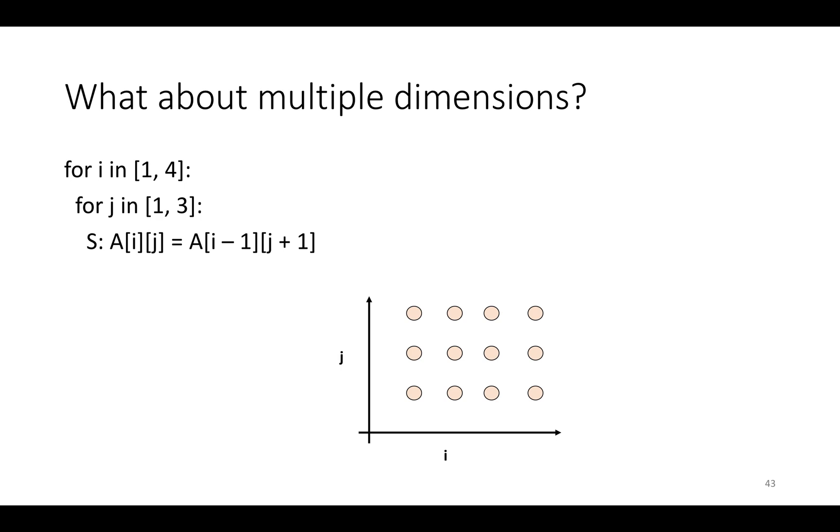So the other issue about generalizing the technique we learned in the last video is what about multiple dimensions? In the last video, the set of equations that we got and the program analysis problem that we were doing were based on a one-dimensional program transformation. Take one for loop and ask whether it could be reordered. But how do we deal with the problem of loops with multiple different for loops or loop nests with multiple loop levels like the one we see on the left here?